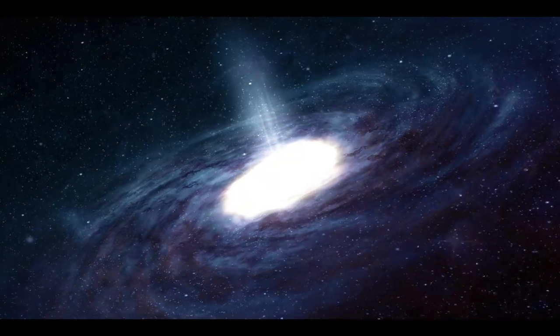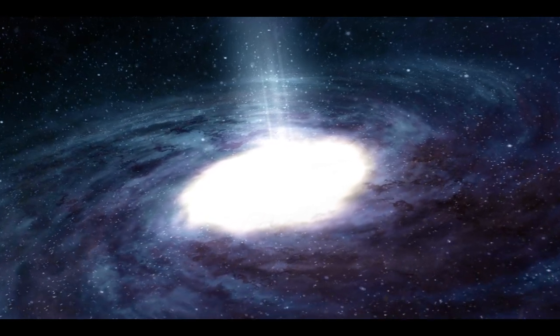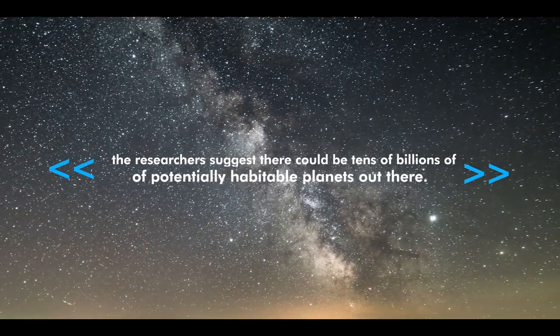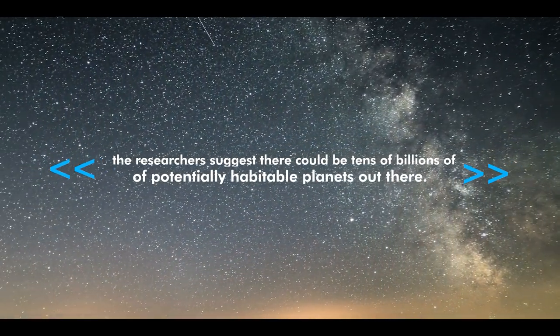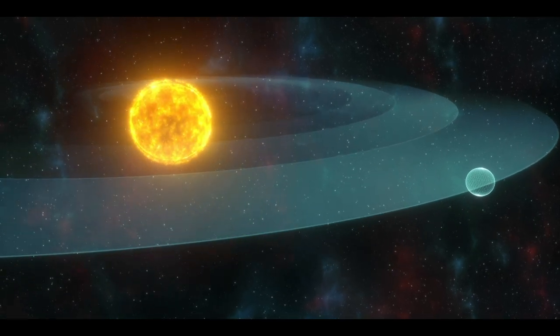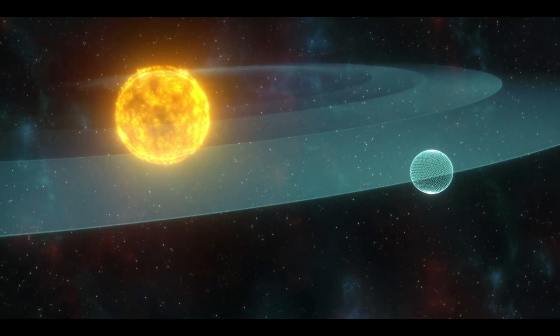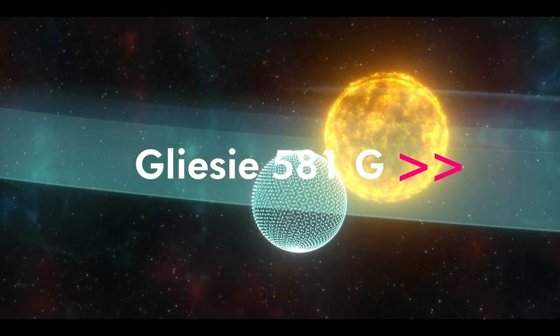The Milky Way has billions and billions of stars beyond the 100 closest to Earth. With that in mind, the researchers suggest there could be tens of billions of potentially habitable planets out there. Researchers suggest that tidally locked planets that orbit the habitable zones of red dwarfs, such as Gliese 581g, are likely to harbor life.